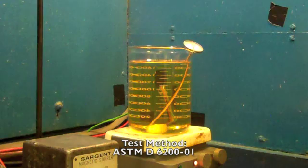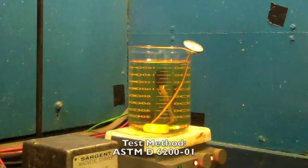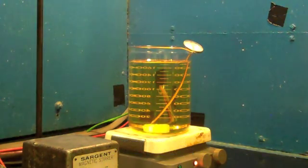This is a test demonstration of ASTM D6200-01, which is a standard test method for determination of cooling characteristics of quench oils by cooling curve analysis.